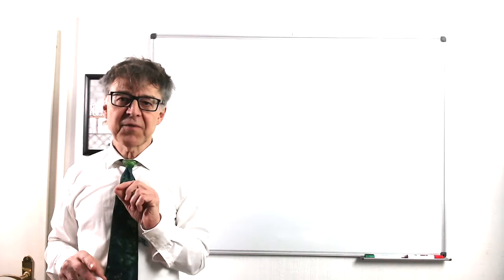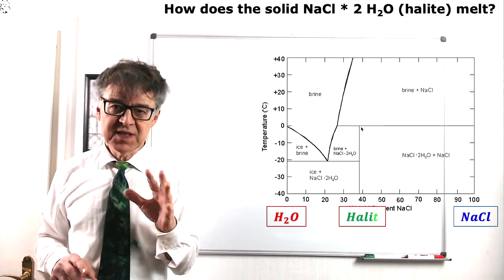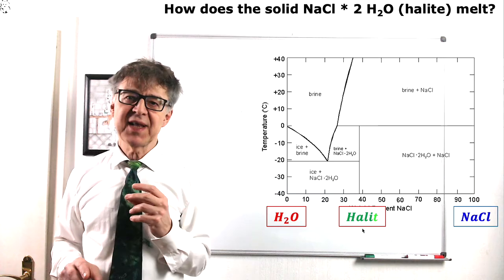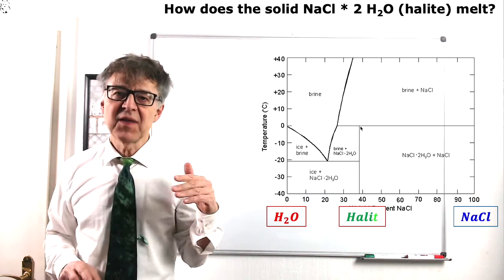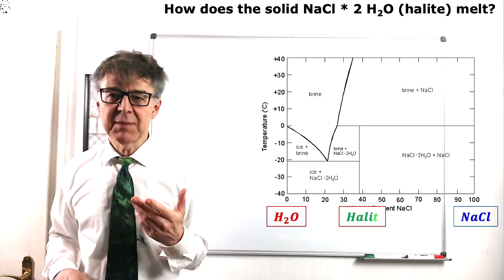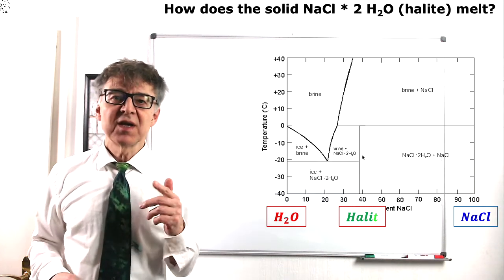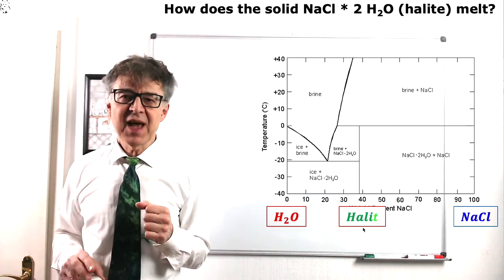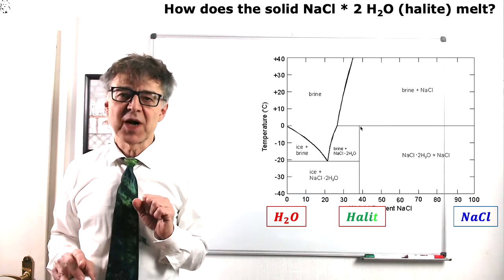Here we see the phase diagram of the water-NaCl system. It is a bit more complicated because in addition to H2O and NaCl, we have another homogeneous solid phase, the halide. Halide, chemical formula NaCl·2H2O, is only stable up to approximately zero degrees Celsius and then decomposes into solid NaCl and liquid brine.